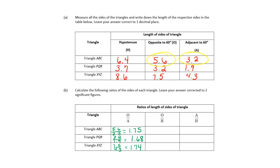They should have been exactly the same because they're all similar. Opposite over adjacent for any right triangle we're going to call tangent. If I type into a calculator the tangent of 60 degrees, the actual tangent of 60 degrees is 1.73. So if I type tangent of 60 into my calculator, I'll get 1.73.